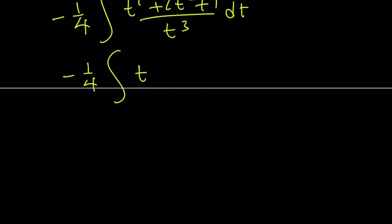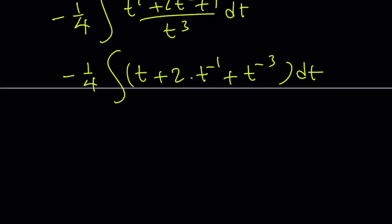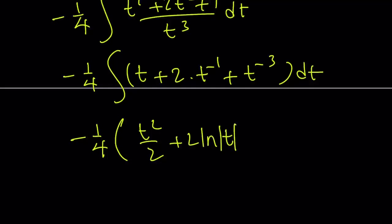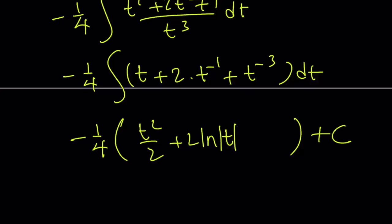We're going to go ahead and separate them. This is going to be t, this is going to be 2 times t to the power of negative 1, and this is going to be t to the power of negative 3. This is very easy to integrate — we're just going to use power rules. Integrating t gives t squared over 2. The middle term gives 2 times ln absolute value of t. And the last term gives t to the power of negative 2 divided by negative 2, which we can write as negative one-half t to the power of negative 2.